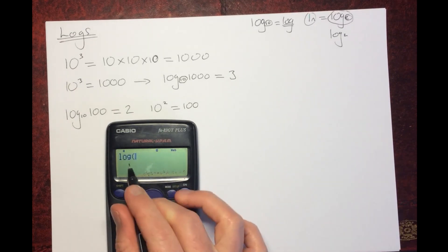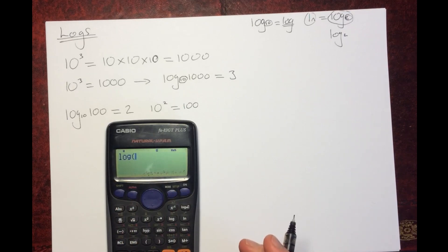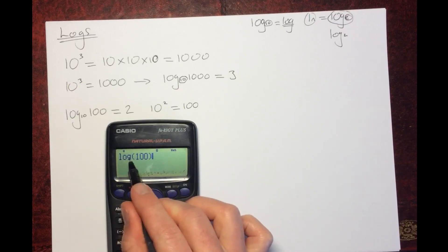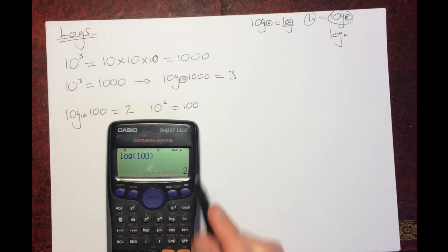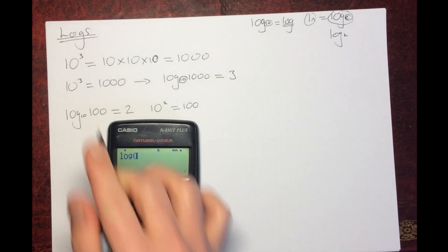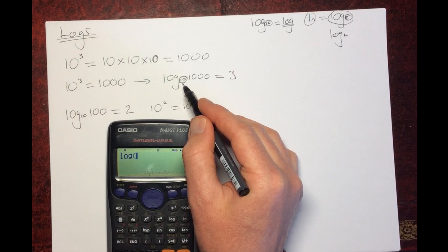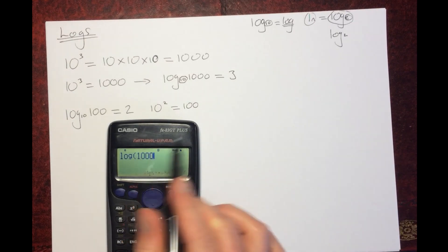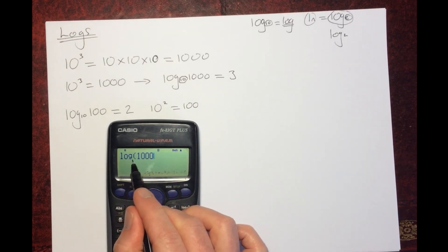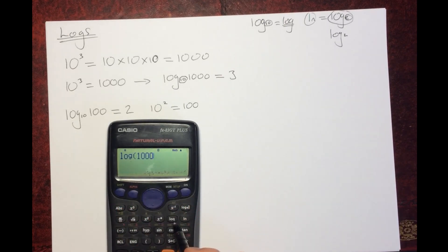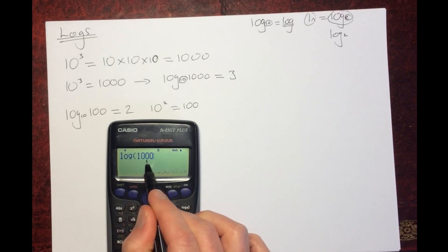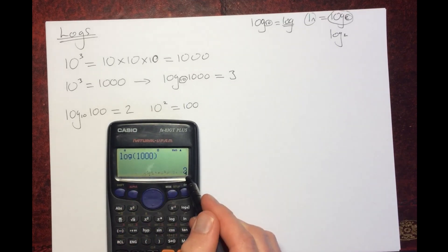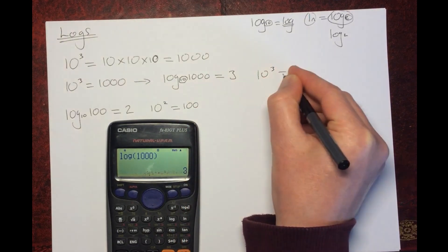Let's do that on our calculator. Press the log button — remember, no base shown means log to the base 10. Type in 100; we're asking what power you need to raise 10 to to get 100, and the answer is 2. Doing the previous example, log to the base 10 of 1000 gives you 3, meaning you need to raise 10 to the power of 3 to get 1000.